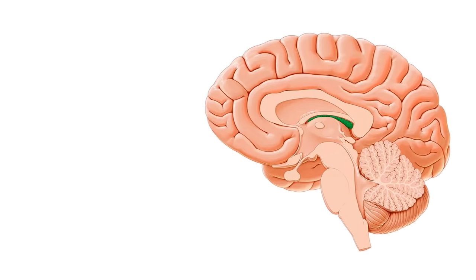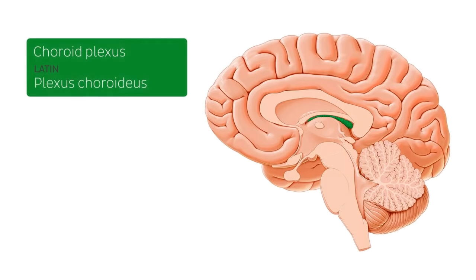We're going to begin this tutorial on the choroid plexus with our mid-sagittal section of the brain, and just to point out a few structures before we start — here in the forebrain we have of course our cerebral cortex with its sulci.